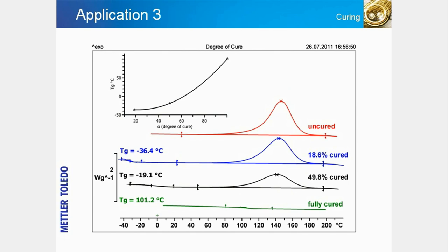Another important application of differential scanning calorimetry is to measure the curing reaction and glass transition temperature in epoxy resin systems. The diagram displays DSC curves of several samples cured to different extents. The results show that with increasing degree of cure, the glass transition shifts to higher temperatures and the enthalpy of the post-curing reaction decreases. In the diagram, the degree of cure increases from top to bottom, from the red curve of the uncured sample to the green curve of the fully cured sample.